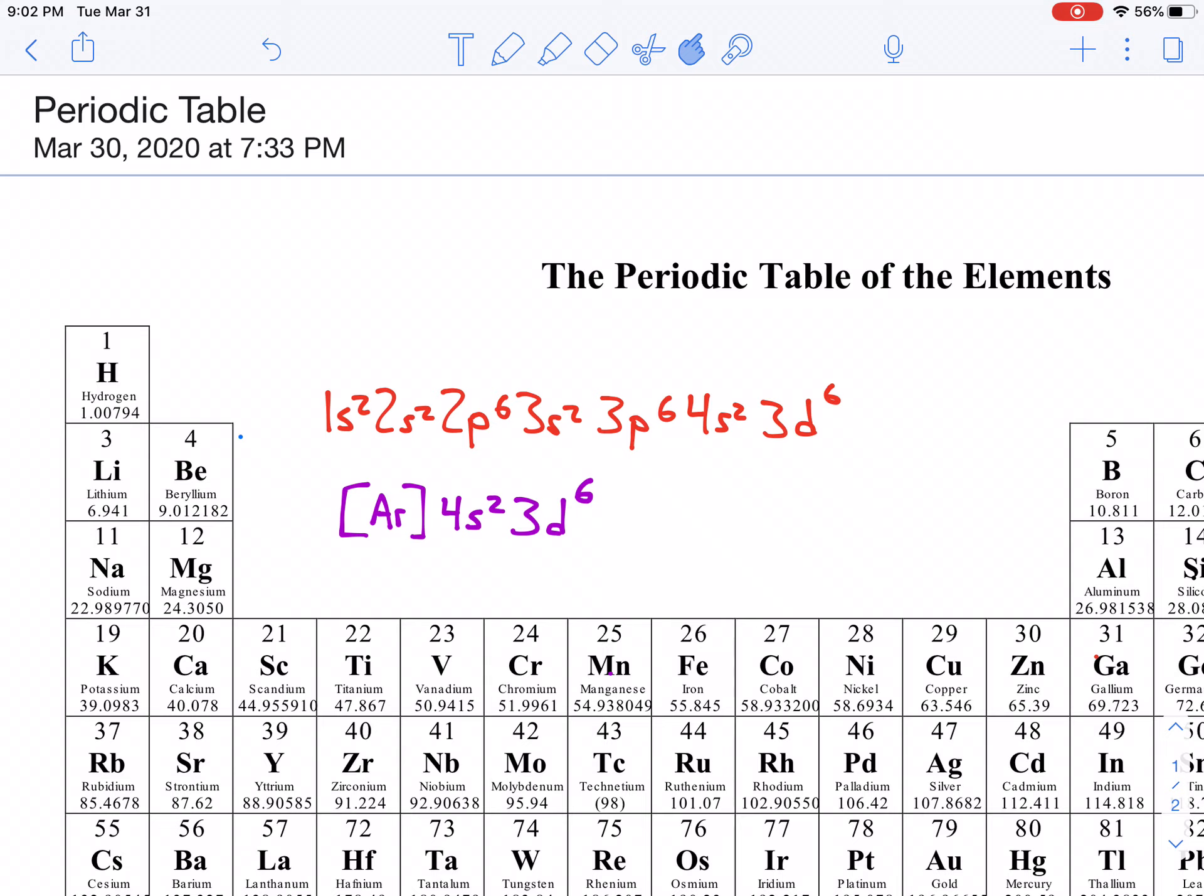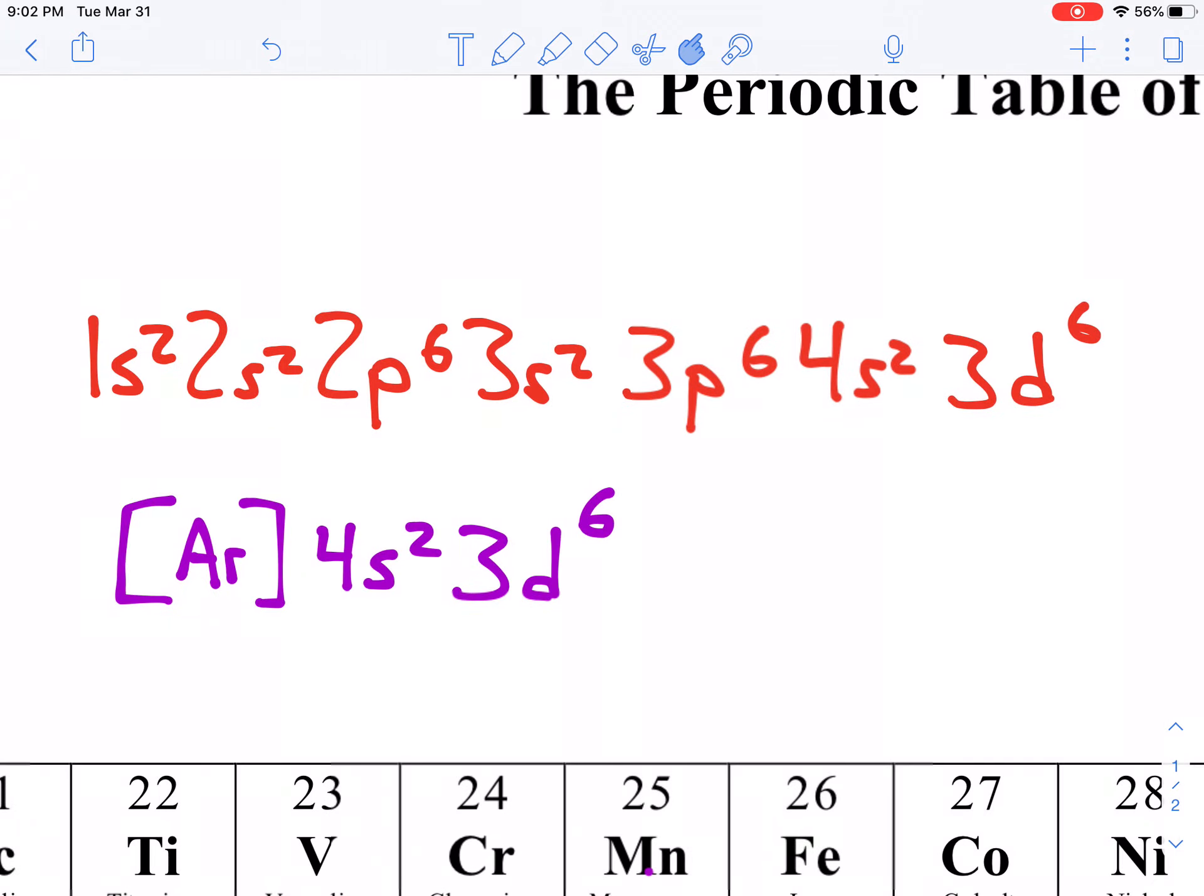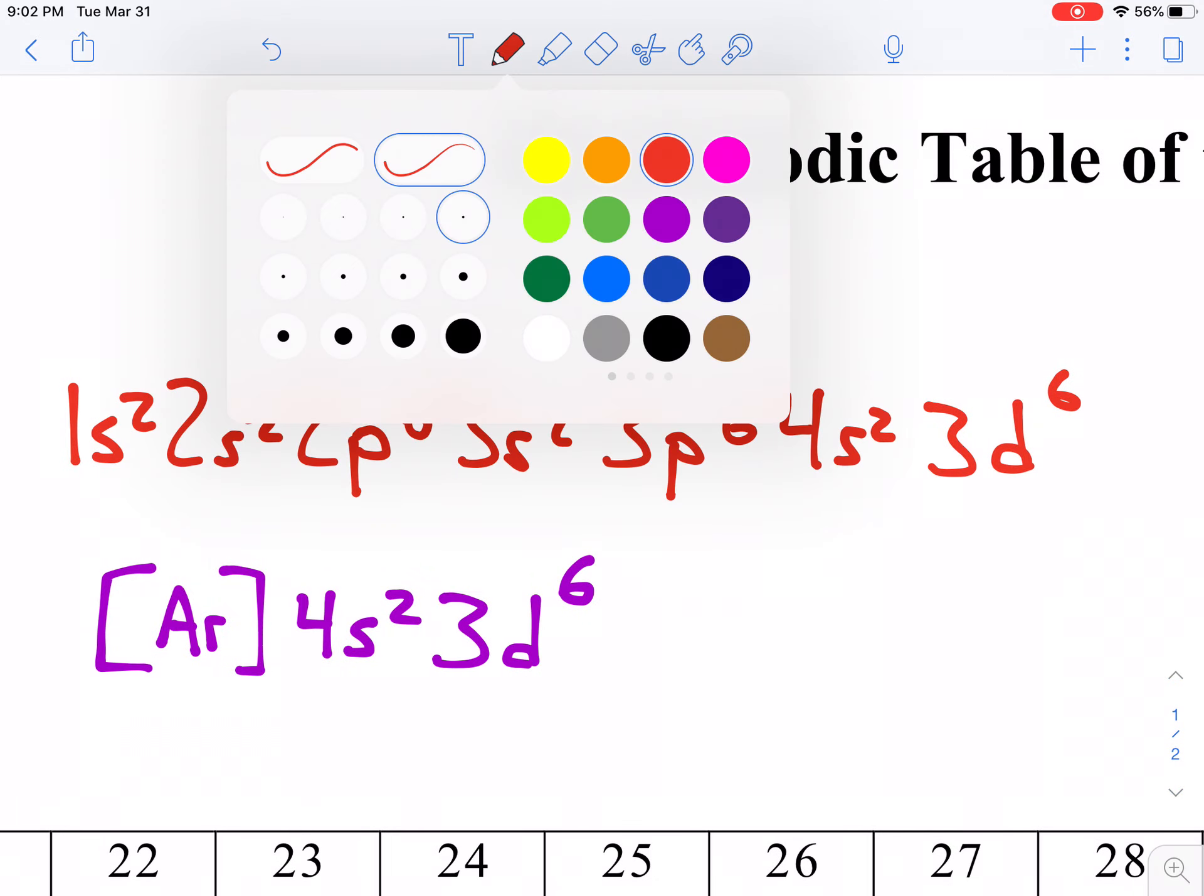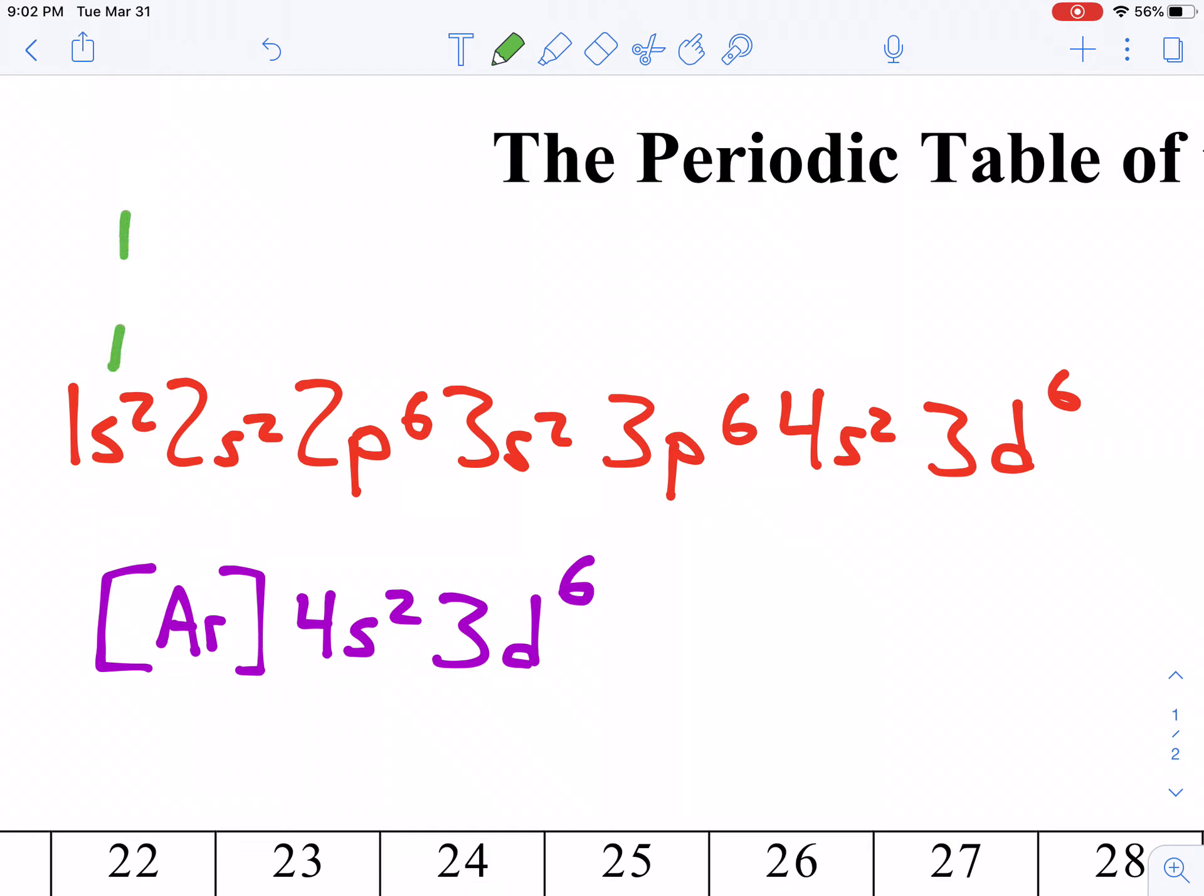And so, you'll notice, we did save time on the front end there. That took a while to go through that entire red electron configuration. But, it allows us to answer these questions a little bit more easily. Because, letter A says, how many electron-containing orbitals are in an atom of iron? Well, remember that every s orbital, every time we've written s, that represents 1 orbital. So, here's 1 orbital. Here's 1 orbital. P represents 3 orbitals. So, there's 3 orbitals. Here's 1 orbital. Here's 3 orbitals. There's 1 orbital there.